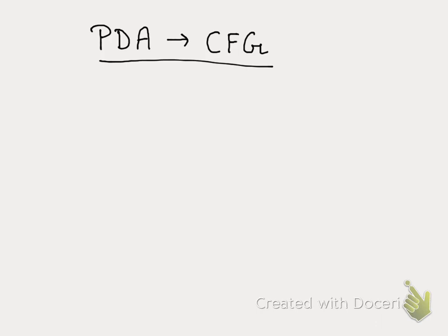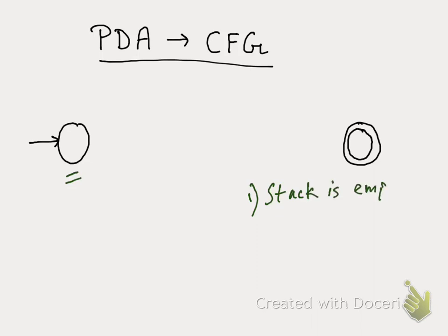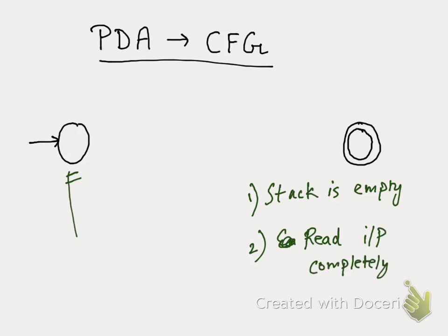To do this, you should only realize one thing. Given a PDA, if this is the initial state and this is the ending state, when do you say that a string is accepted? There were two rules: a string is accepted if the stack is empty at the beginning and empty at the end, and you have read the input completely.